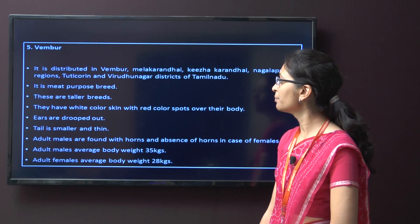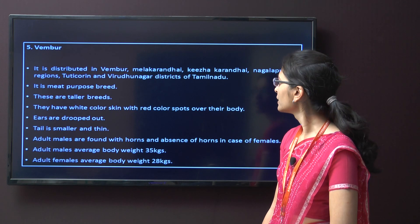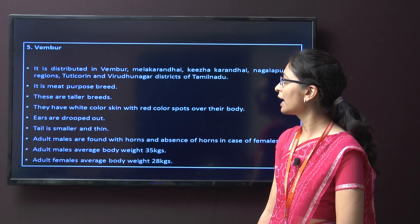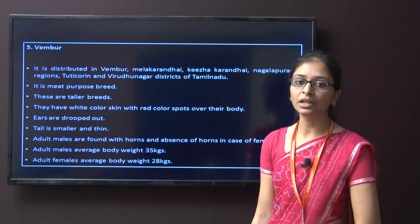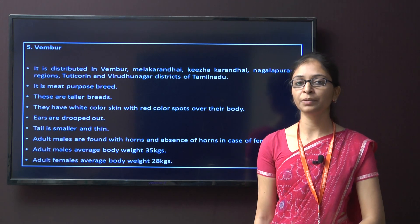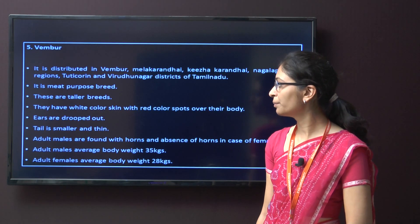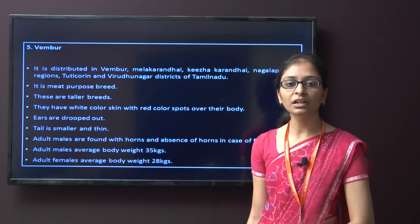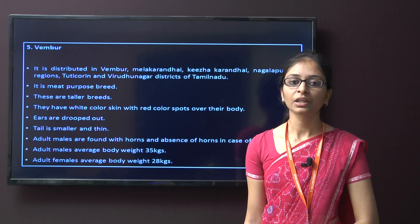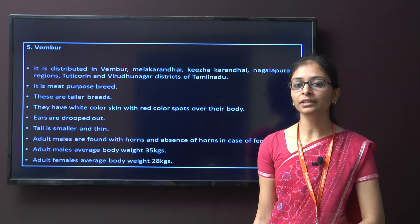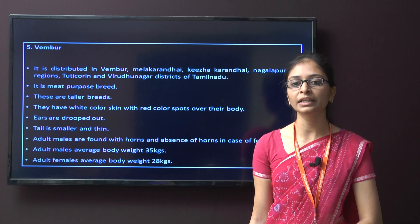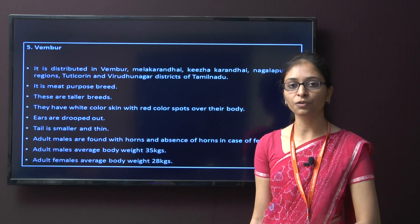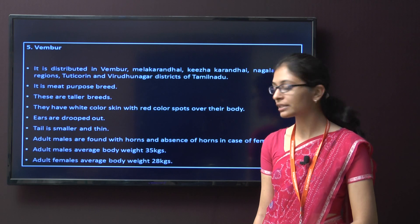The next breed is Mambur. It is distributed in Mambur, Melakaranai, Kilakaranai, and Nagalapuram region, and also in Tuticorin and Virudhunagar district of Tamil Nadu. It is also a meat purpose breed, and these are taller breeds. Characteristics include white skin colour, dropped ears, small tail, and adult males are found with horns while females have no horns. The body weight for this breed is around 35 kg for male and around 28 kg for female.